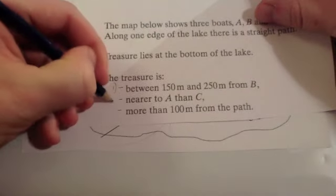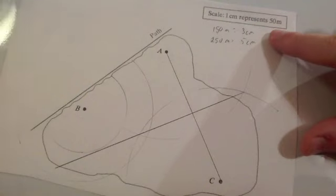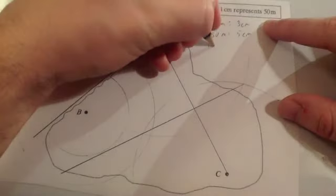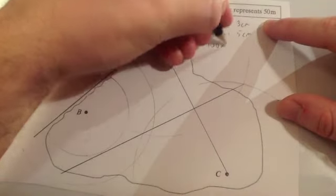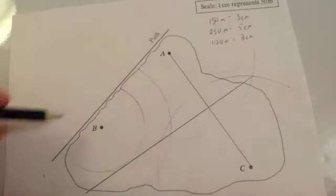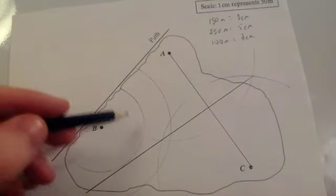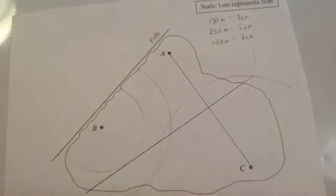The last condition: it's more than 100 meters from the path. Remember, one centimeter is 50 meters, so 100 meters is 2 centimeters. We know there's the path here, so we're going to get our ruler and measure 2 centimeters from the path, keep doing a few of those points, and draw a straight line through them.